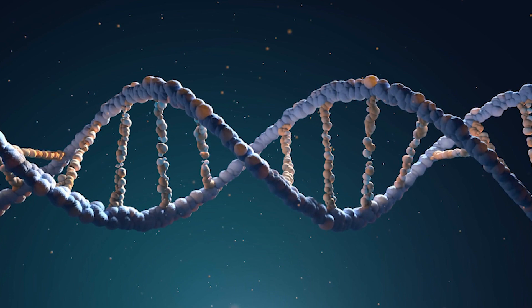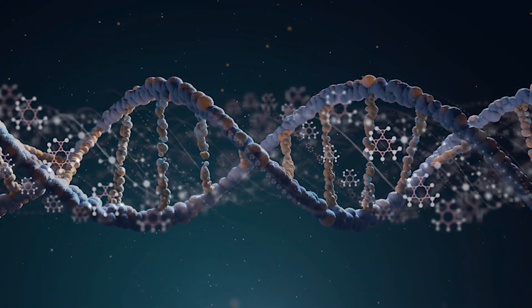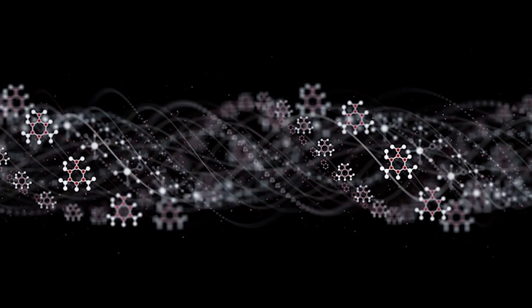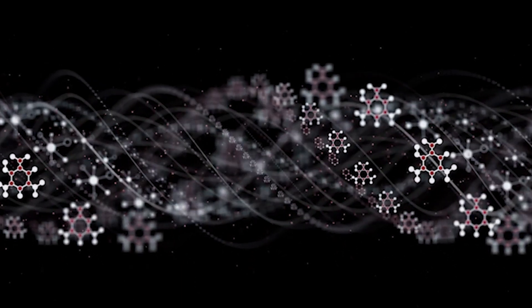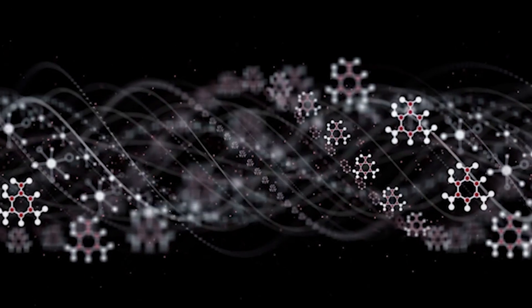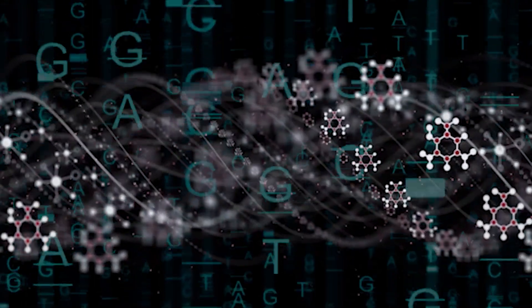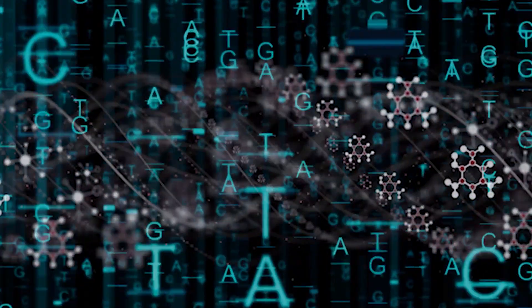Nucleotides are somewhat complex themselves, composed of three subunit molecules: a nucleobase, a five-carbon sugar, and a phosphate chemical group. The four nucleobases in DNA are guanine, adenine, cytosine, and thymine.